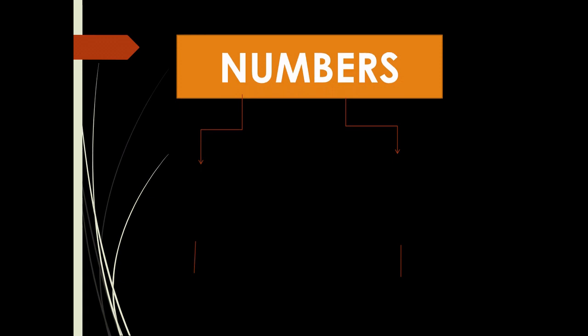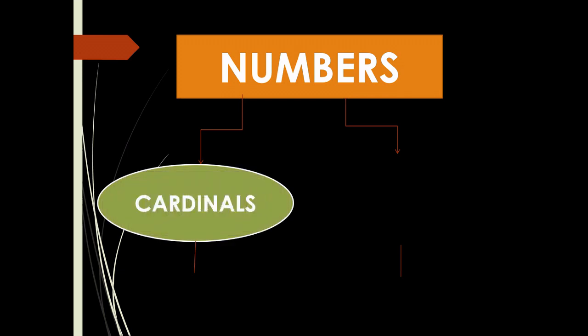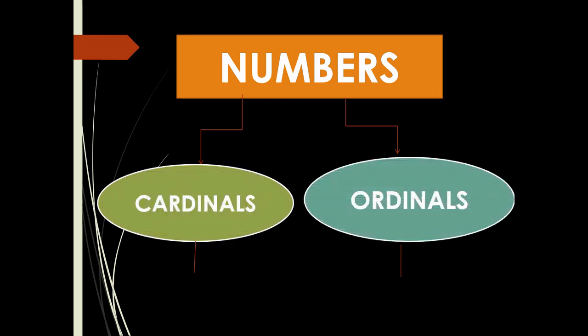Numbers are further divided into two parts: cardinal numbers and ordinal numbers. Cardinal numbers show quantity, while ordinal numbers show order.